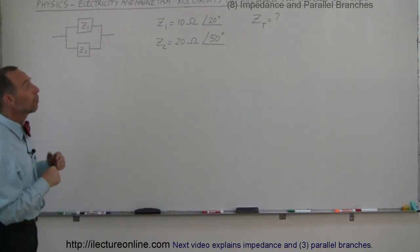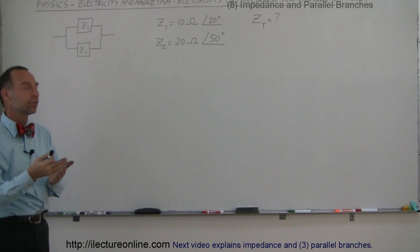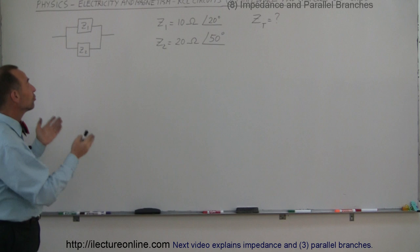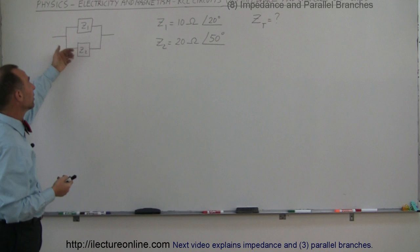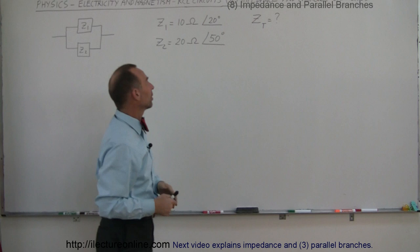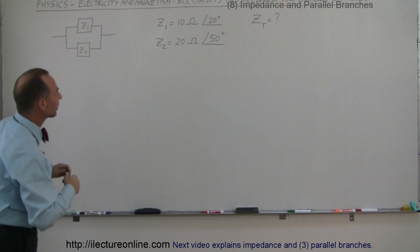Here we're going to apply what we've learned so far, using the representation of Z in both the complex number format and the magnitude-and-angle format, to find the total impedance when we have two parallel branches with indicated impedances Z1 and Z2. Z1 has a magnitude of 10 ohms and a phase angle of 20 degrees. Z2 has a magnitude of 20 ohms and a phase angle of 50 degrees.